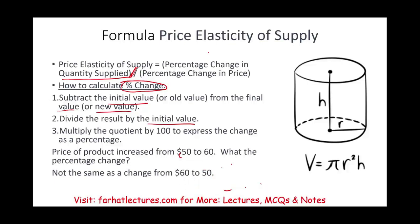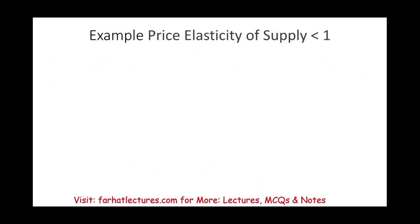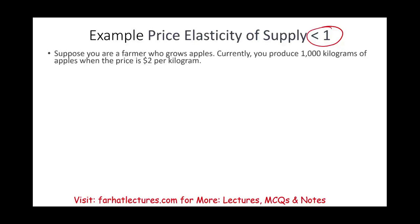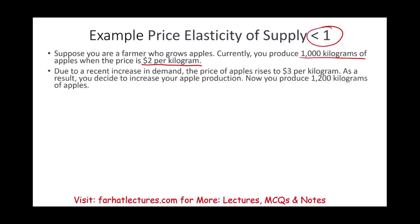Let's look at an example where elasticity is less than 1. Suppose you're a farmer who grows apples. Currently you produce 1,000 kilograms when the price is $2 per kilogram. There was a recent increase in demand — consumer taste for apples changed due to health reports — so the price rises to $3 per kilogram. As a result, you decided to increase production to 1,200 kilograms. Let's compute the price elasticity of supply.